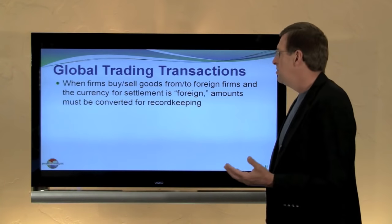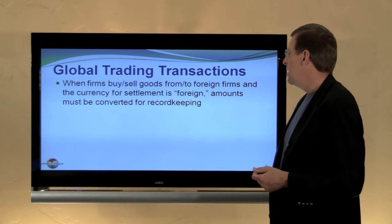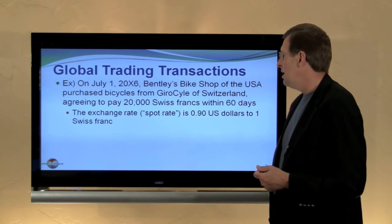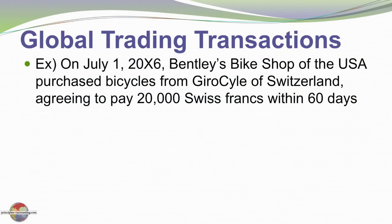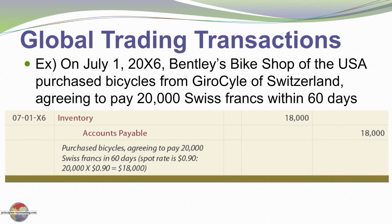Next, let's turn our attention to global trading transactions where we buy and sell goods and make or take payment in a foreign currency. When a firm buys or sells goods from or to foreign firms and the currency for settlement is the foreign currency, the amounts must be converted for record-keeping purposes. For example, assume Bentley's Bike Shop of the United States purchased bicycles from GyroCycle of Switzerland, agreeing to pay 20,000 Swiss francs within 60 days. Bentley has engaged in a foreign currency transaction. Assume the spot rate is 90 cents per Swiss franc. In the journal entry, 20,000 Swiss francs at 90 cents each comes to $18,000, so we debit inventory $18,000 and credit accounts payable $18,000.